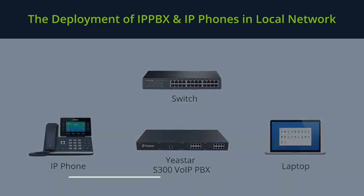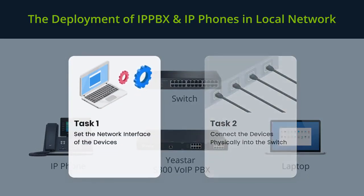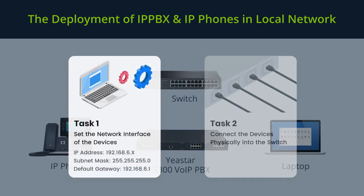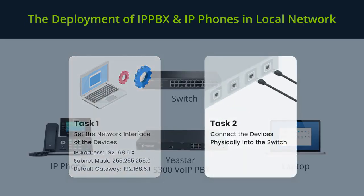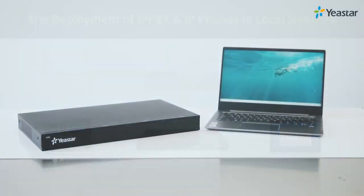We need to finish two major tasks on each device. The first one is to set the network interface of the device. Make sure they are under the same IP segment and following the local network rules so they would be accessible from each other. We will take the following information as an example, then connect all mentioned devices physically into the switch.